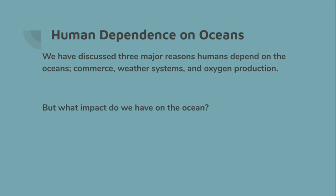When we talk about human dependence on oceans, we've focused on three major categories: commerce, our weather systems, and oxygen production. But what impact do we have on the ocean? That is what the rest of the padlet will be about.